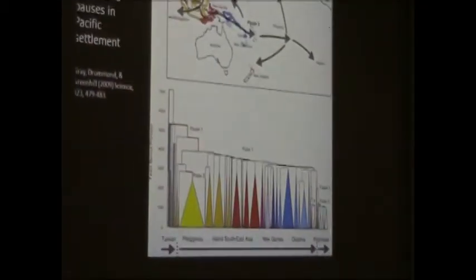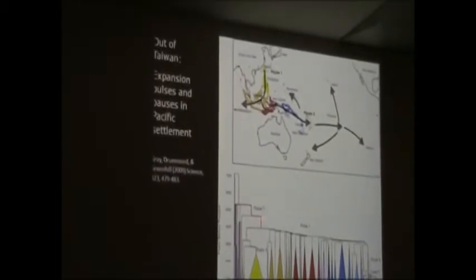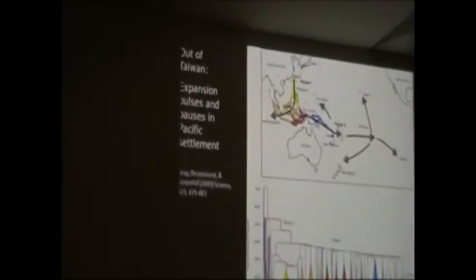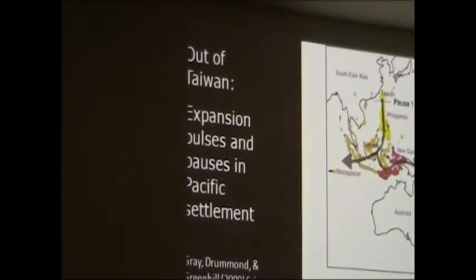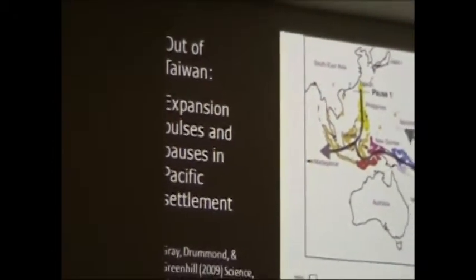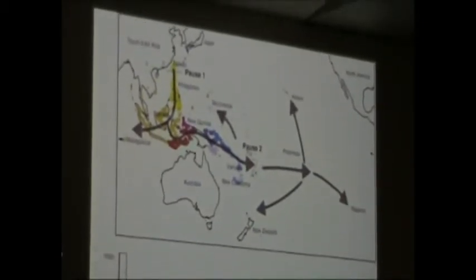A recent analysis of the linguistic data is identifying a number of different pauses in this migration. So it's not necessarily a fast train, but it is an express train of sorts that pauses or has a few stops along the way. This is the final pulse out into Polynesia — populations moving from Taiwan, the language changing slowly, and ultimately reaching Polynesia.